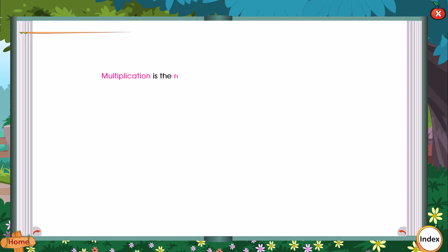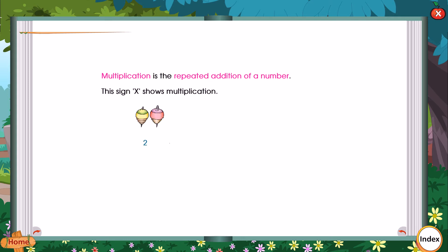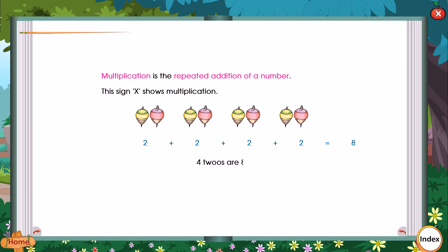Multiplication is the repeated addition of a number. This sign x shows multiplication. 2 plus 2 plus 2 plus 2 is equal to 8. 4 2's are 8.